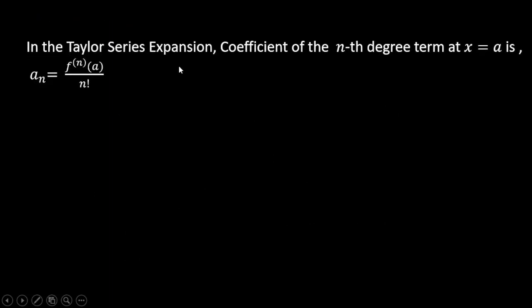So here the Taylor series expansion coefficient of the nth degree term at x = a is what we see: aₙ = f⁽ⁿ⁾(a)/n!, that is the nth degree derivative at a divided by n factorial.